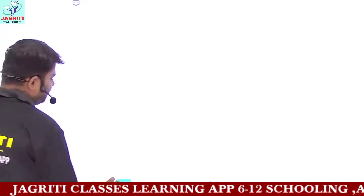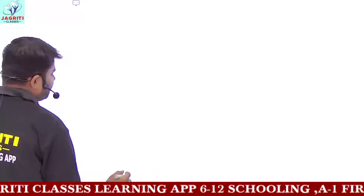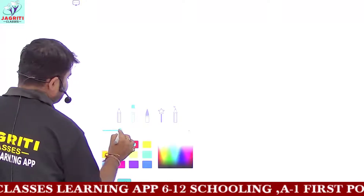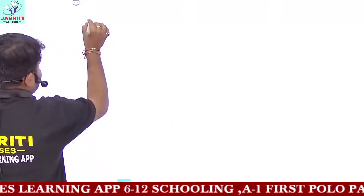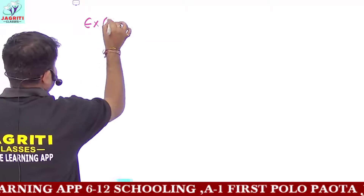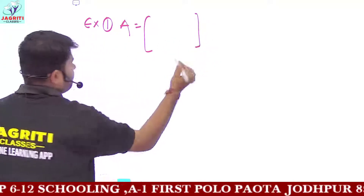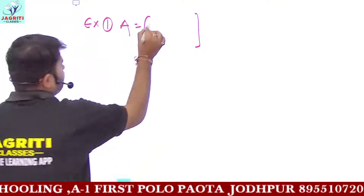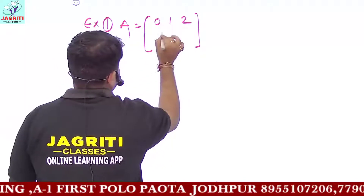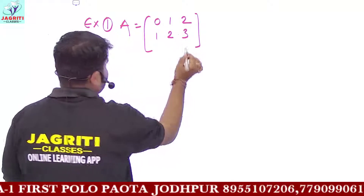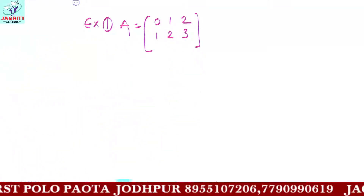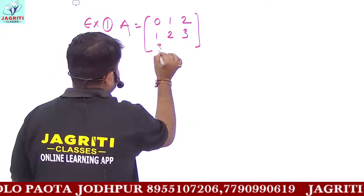Today we are going to take elementary operations on a 3 by 3 order matrix. So our first example related to a 3 by 3 order matrix is Example 1: A equals to [0, 1, 2; 1, 2, 3; 3, 1, 1].